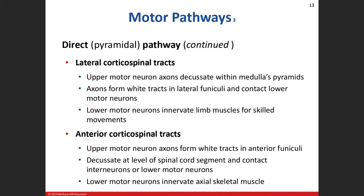Let's talk about two specific pathways: the lateral and the anterior corticospinal tracts. 'Cortico' stands for the cerebral cortex, so this pathway originates in the gray matter of your brain and travels down into the spinal cord. For the lateral one, the upper motor neuron decussates - meaning it crosses over - in the medulla oblongata's pyramids, which is the most inferior portion of your brainstem.